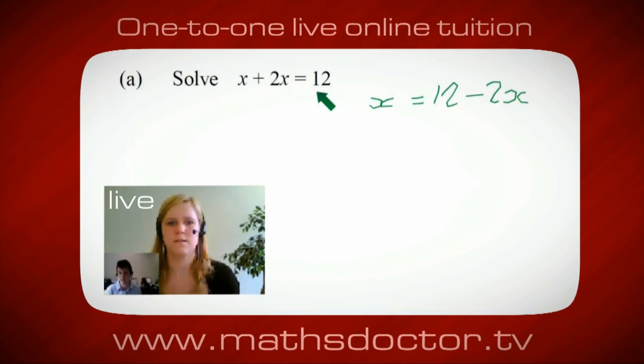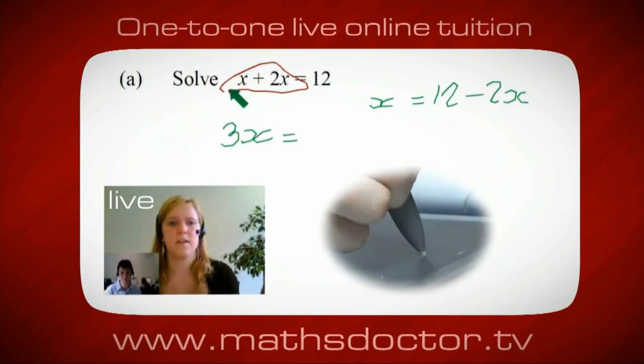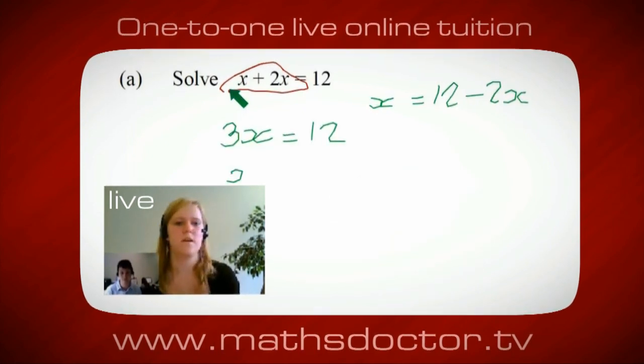OK, so a lot of the time we want to get x by itself. But what we want to do first is get all of these x's together. So can you see anything we can do with this? It's 3x, isn't it? Yeah, absolutely. So 3x equals 12. Oh, and so x equals 4. Brilliant. Spot on. Well done.